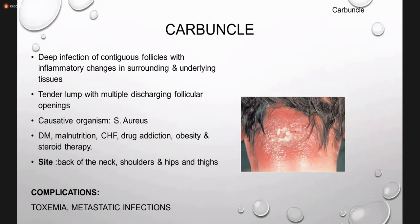The sixth is carbuncle — folliculitis with contiguous hair follicles, meaning the infection is deeper and involves multiple follicles at the same site. It presents as a tender lump with multiple discharging follicular openings. It is rarely seen in normal individuals but is commonly associated with diabetes mellitus, malnutrition, chronic heart failure, drug addiction, obesity, and steroid therapy. Sites are the back of the neck, shoulder, hips, and thighs. If not treated, it can lead to toxemia or metastatic infection.